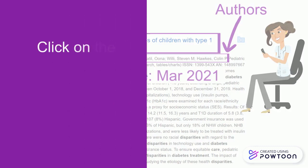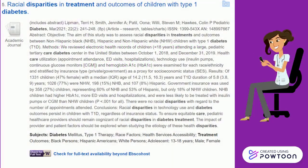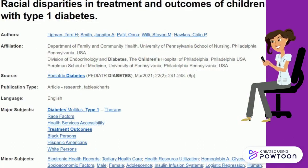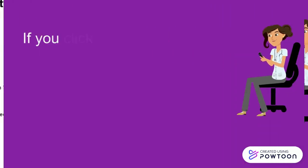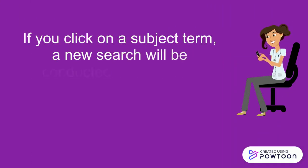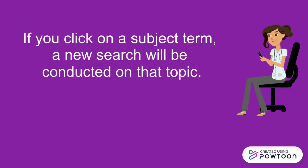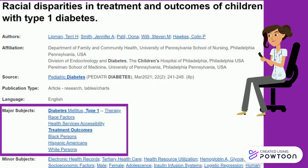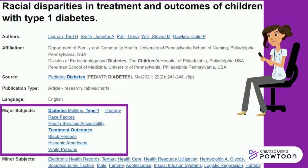Click on the title for more information. Clicking on the article title brings us to a detailed record for this resource within CINAHL. If you click on a subject term, a new search will be conducted on that topic. The article, Racial Disparities in Treatment and Outcomes of Children with Type 1 Diabetes, has several subject terms in its detailed record.